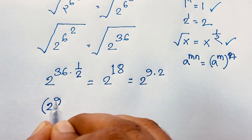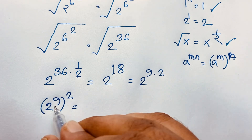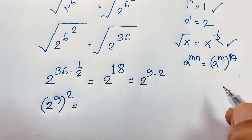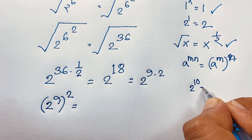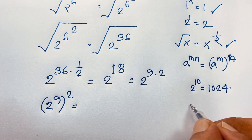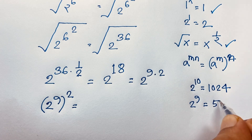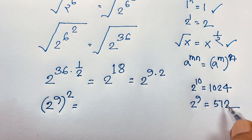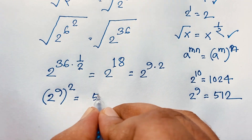Applying this formula, we get (2 to the power 9) squared. Now, 2 to the power 9 is equal to what? We know 2 to the power 10 is 1024, so 2 to the power 9 is 1024 divided by 2, which equals 512. So 2 to the power 9 equals 512.